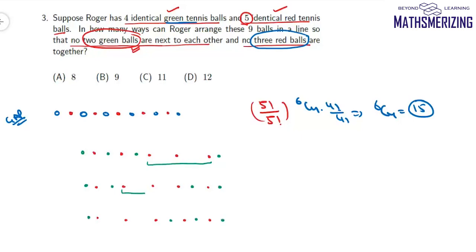So here we'll have three red again, and here also we'll have three red again together. So there are three possible configurations where these three red balls are together.